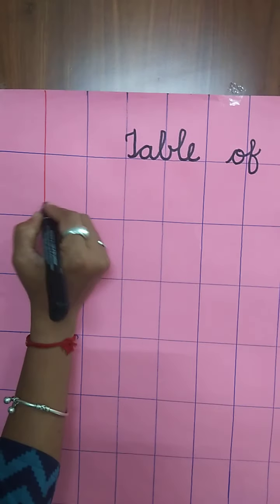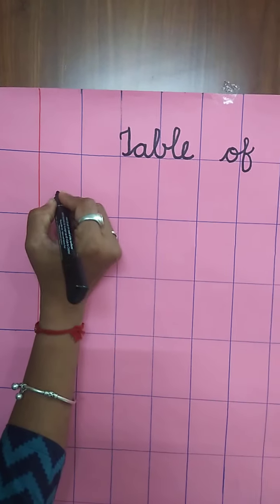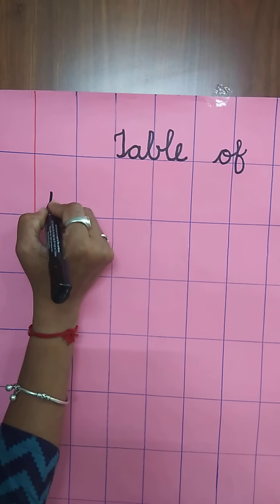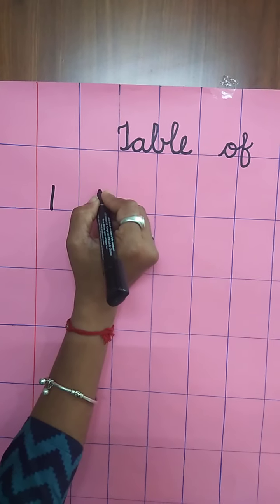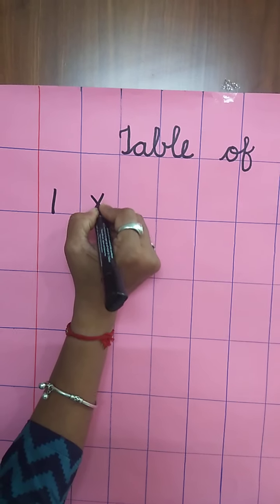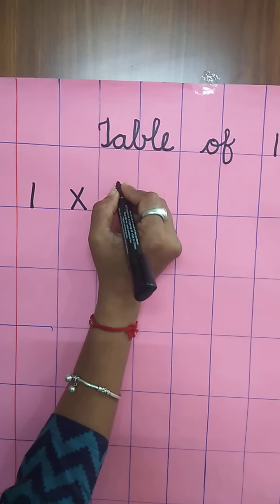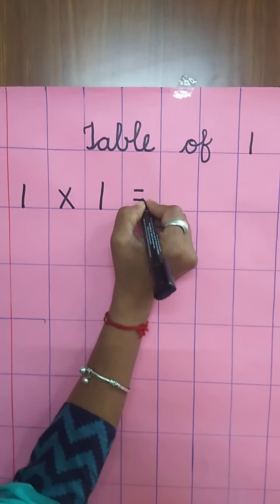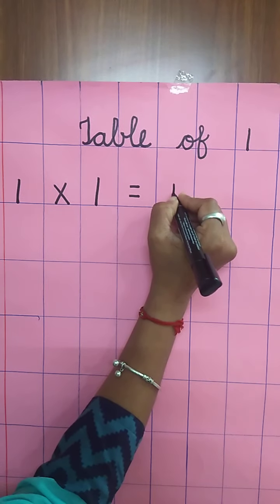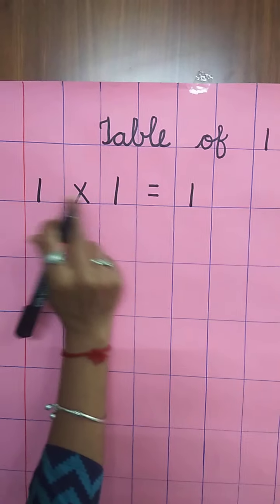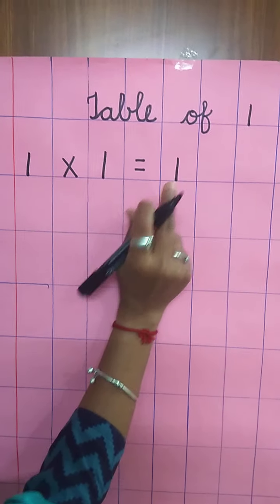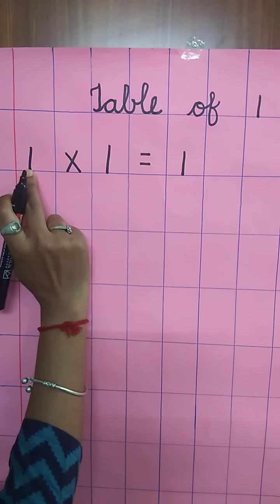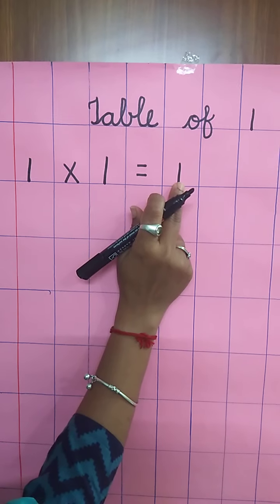This red line is called Margin line. So, after the margin line, first of all, write down one. Multiplying sign. Again, write down one. One equal sign. Write down one. One ones are one. Speak and write, children. Ones ones are one.